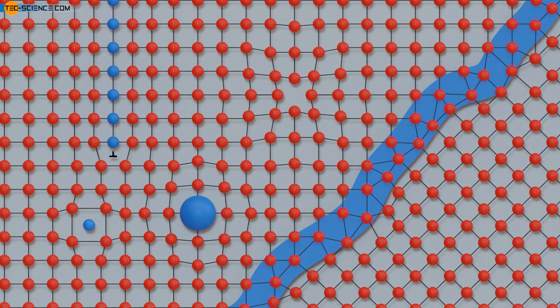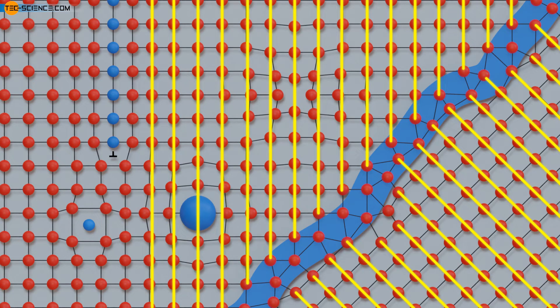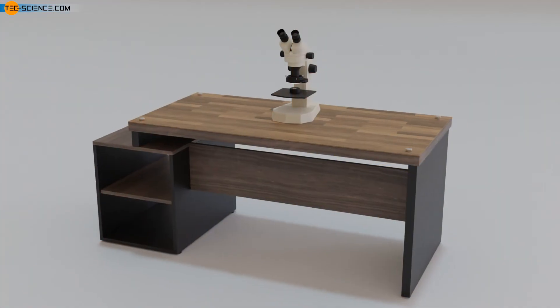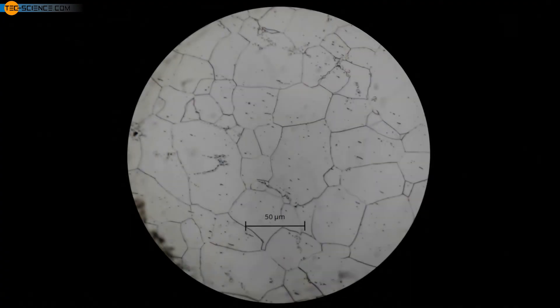Note that the lattice structure in each grain is identical, it is just spatially oriented differently from grain to grain. Special preparation of the samples allows the microstructure of the metals to be made visible under the microscope.